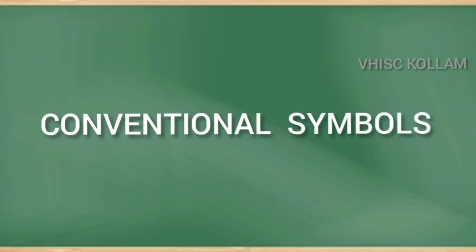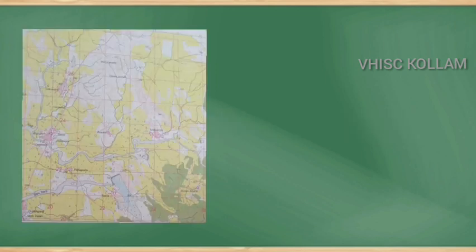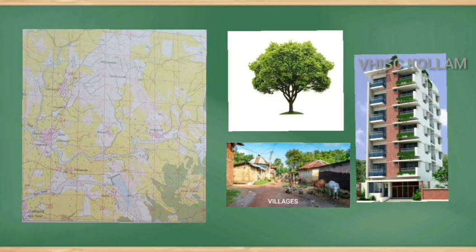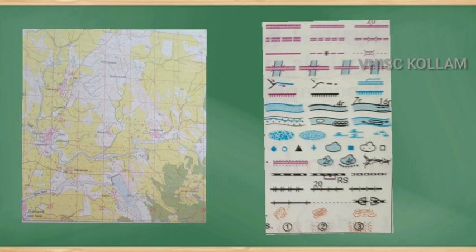Let's move on to the next topic: conventional symbols. The space available on the map is limited. All the features of the land cannot be shown in their actual shape in the limited space available on the map. So, cartographers use a set of standard symbols which are accepted internationally.